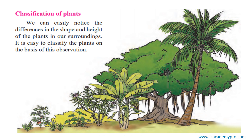Now, the classification of plants — how were they able to classify the plants? We can easily notice from the picture over here the difference in the shape and the height of the plants in our surroundings. If you look at the picture, we find that there are very small plants, there are plants that grow at a particular height, and then we find plants like banyan and coconut that grow very, very tall. Even in that, we find a difference in how the branches grow, how the leaves grow, and how they are able to spread out. So all these were the different ways in which plants were classified.